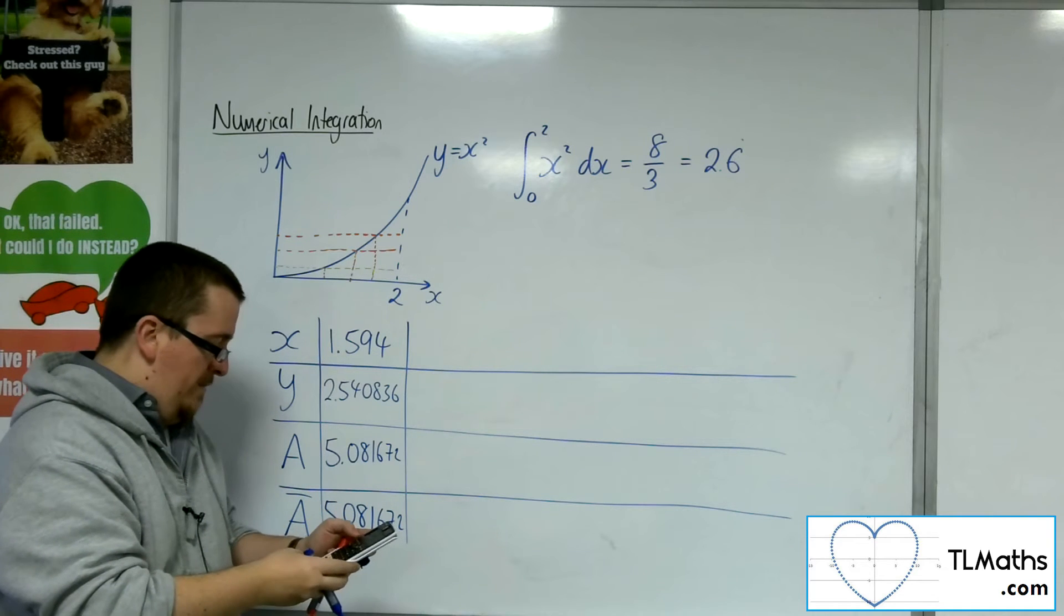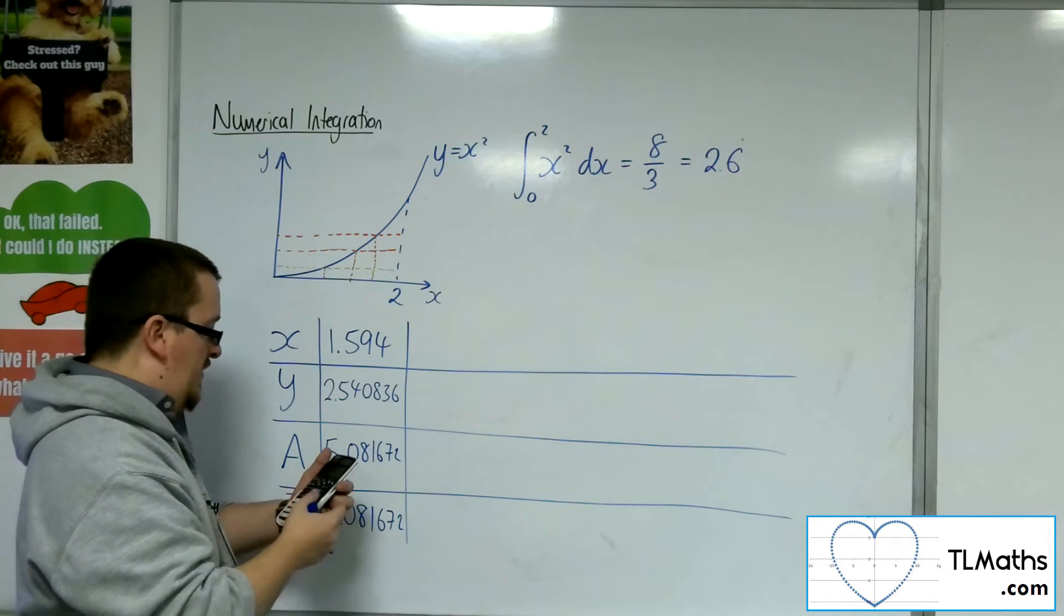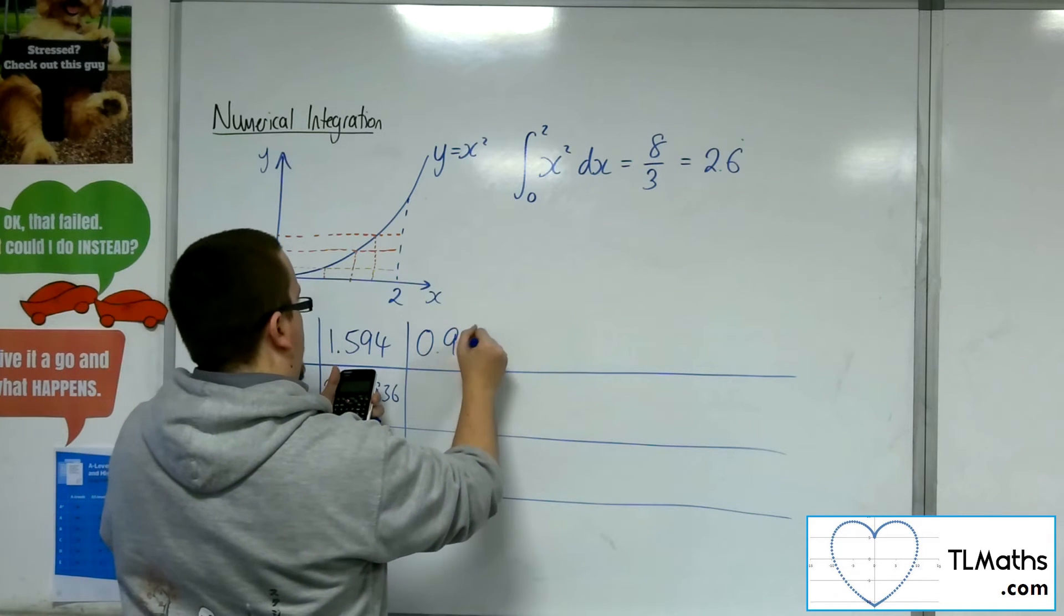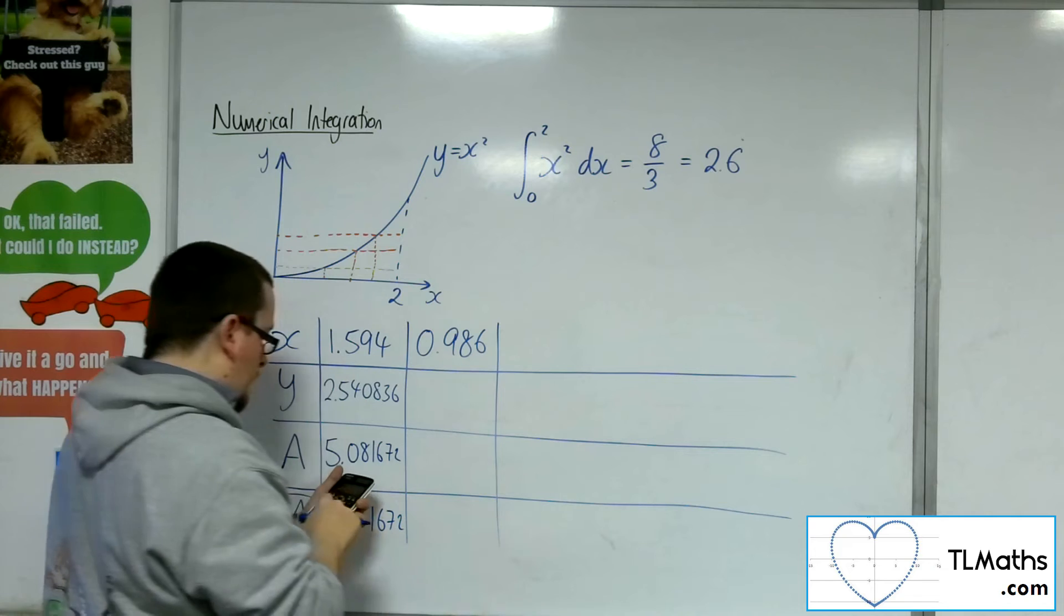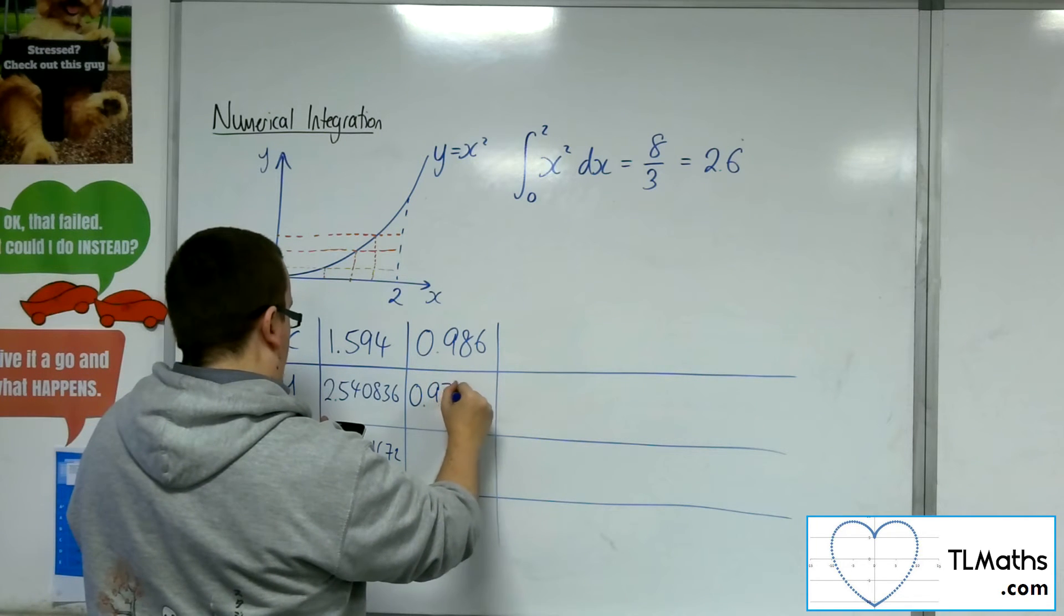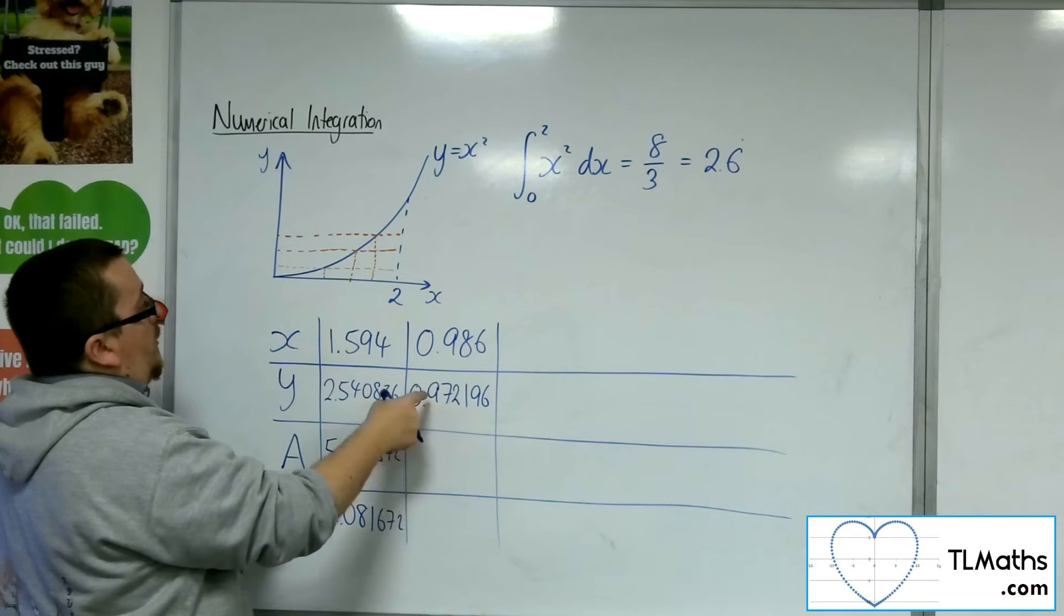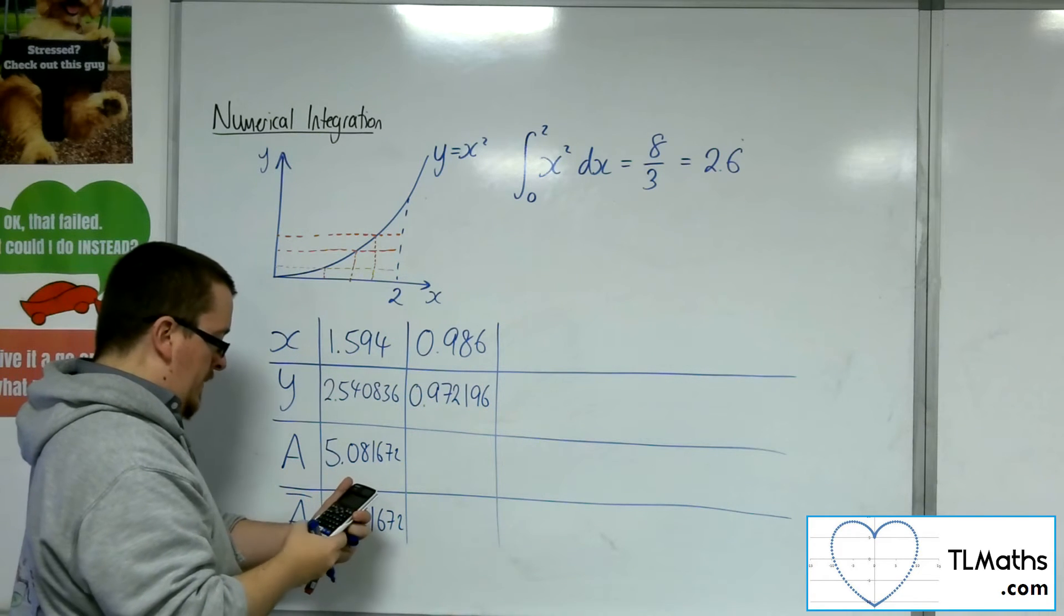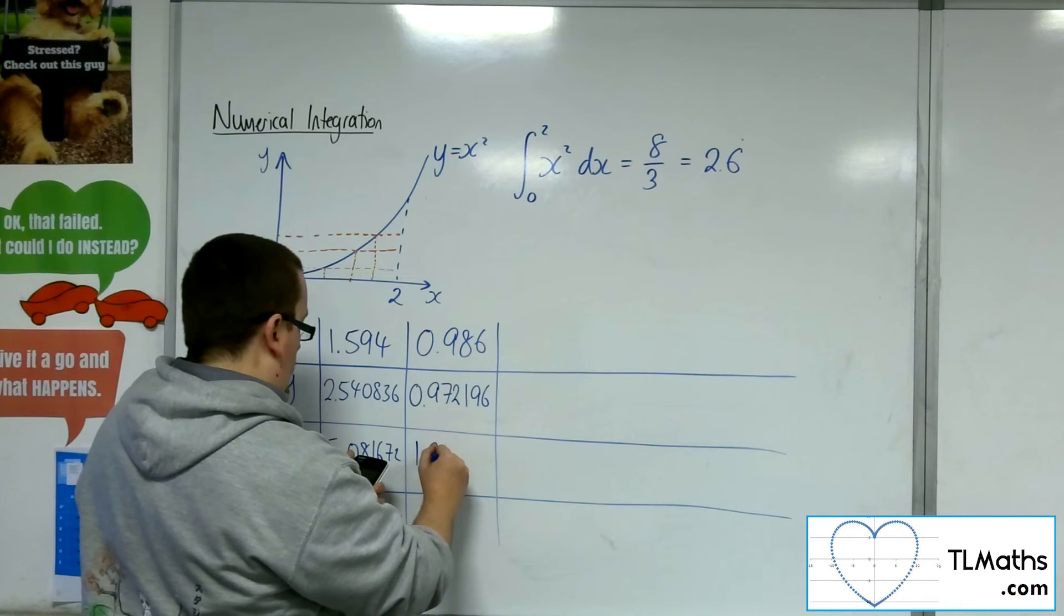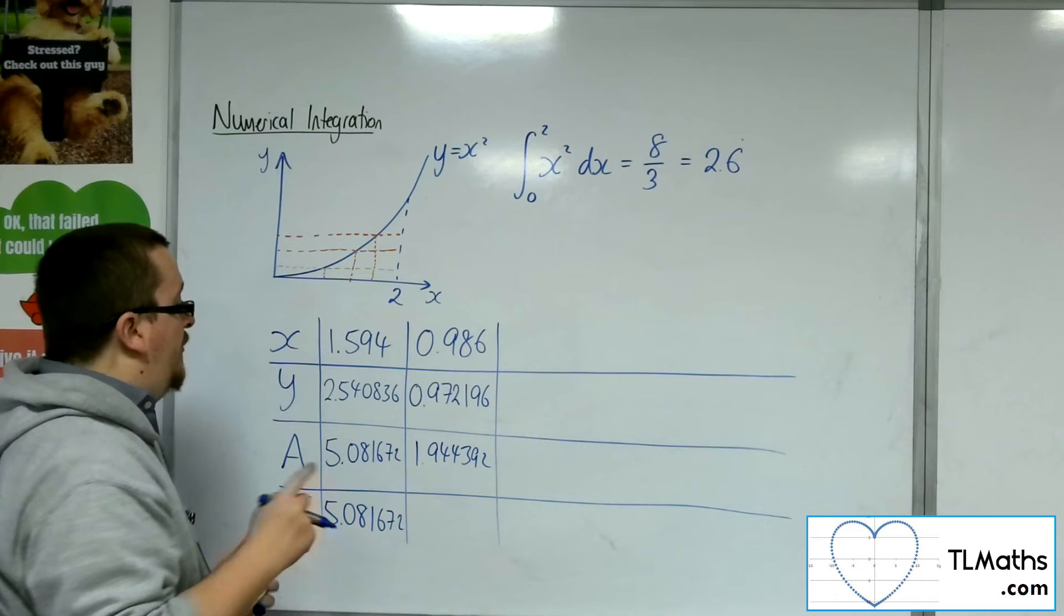Let's try another random number. Random number times by 2. This time I'm getting 0.986. So I square it, I get 0.972196. That's the height of the rectangle. Double it, multiply by 2, 1.944392. So that's the area of my second rectangle.